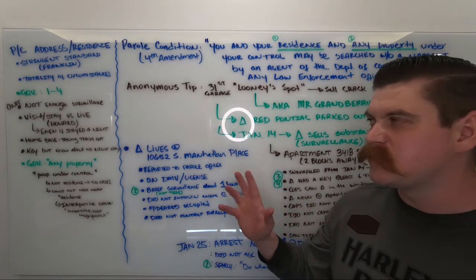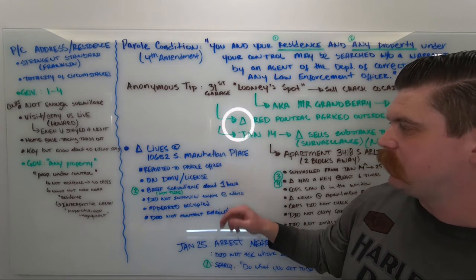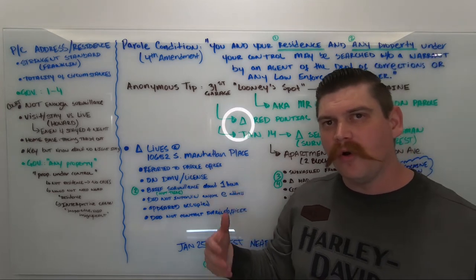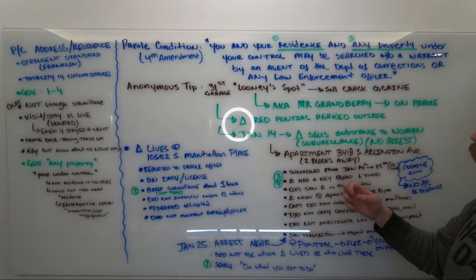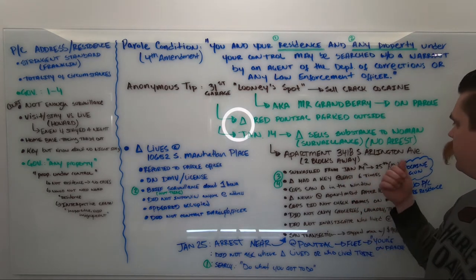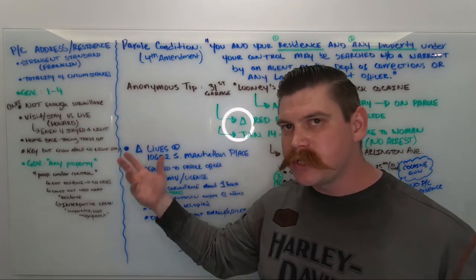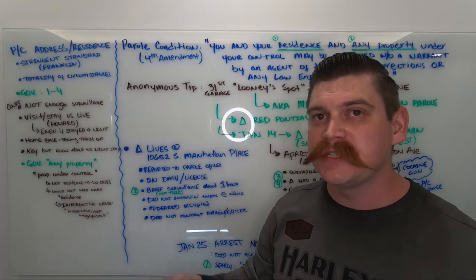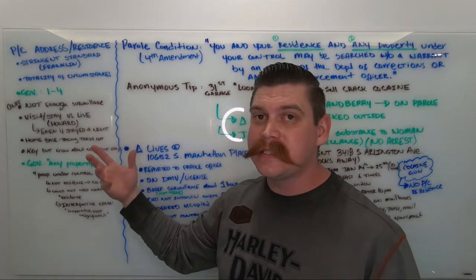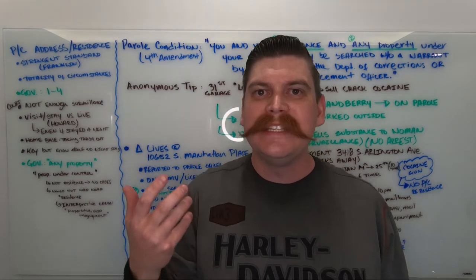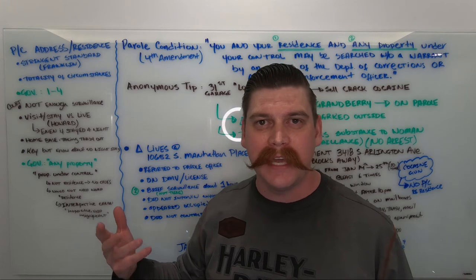But the Ninth Circuit doesn't buy the argument. Number one, the court says that the officers failed to surveil the Manhattan Place. Because they only did it for an hour, of course they wouldn't see Mr. Granbury at this location. They needed to surveil Manhattan Place just as much as they did the apartment at Arlington Avenue. One thing that you might want to check out is another Ninth Circuit case, Howard, which distinguishes between staying somewhere, visiting somewhere versus residence. When you live somewhere that's different. And Howard says that even if you stay somewhere overnight, like your friend's house, that doesn't mean that you reside there. What you need to look at is quote-unquote home base. Whether you do things like taking the trash out of the house, picking up mail and so on.